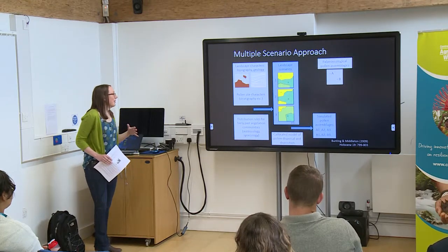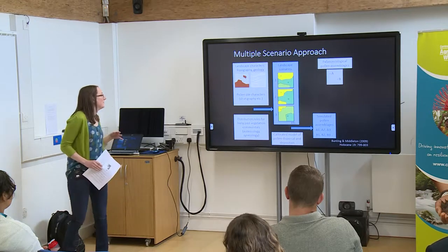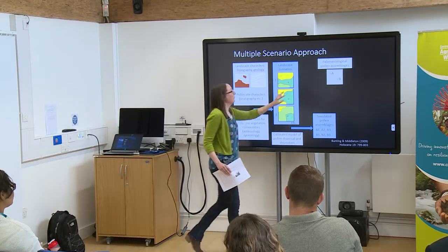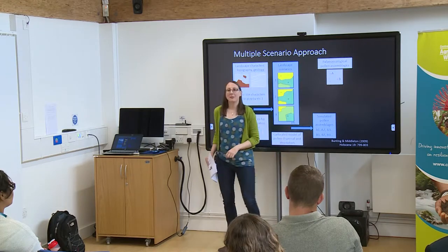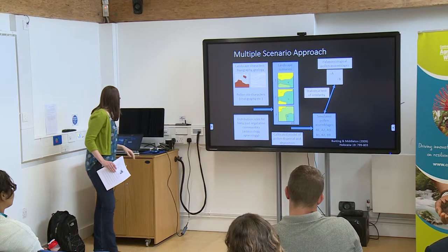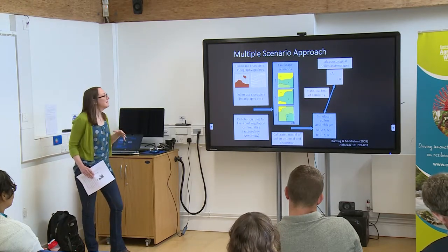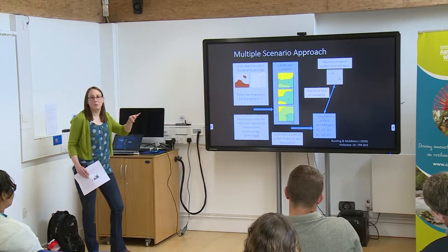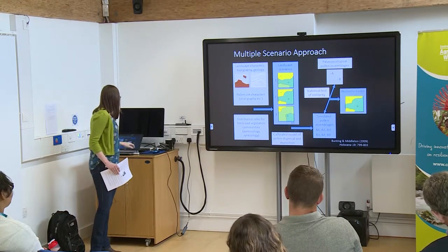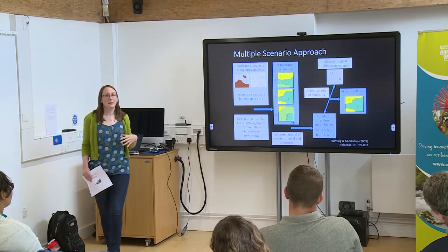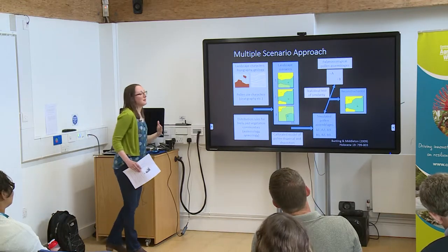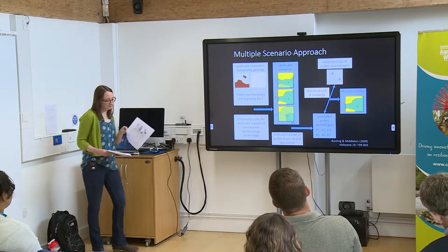You then use that calibrated model of pollen dispersal and deposition to produce simulated pollen assemblages at the places where you actually have real data, to compare them to. You employ a statistical test of similarity between your actual empirical pollen data and your simulated pollen assemblages, and that allows you to come up with some likely reconstructions of past vegetation. That's the method I've been working with primarily.